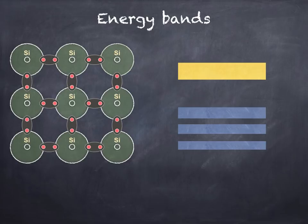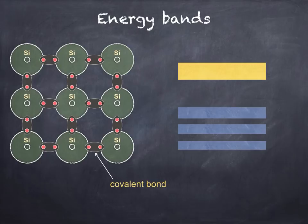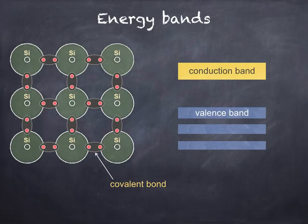Each energy band actually consists of many, many closely spaced energy levels. You can see from the diagram on the left that all four of the silicon atoms' outer electrons form covalent bonds with the neighboring atoms. The diagram on the right shows the energy band model. In order to explain the electrical properties of semiconductors, we only need to consider two energy bands: the valence band and the conduction band. These are separated by a band gap, which we'll discuss later.